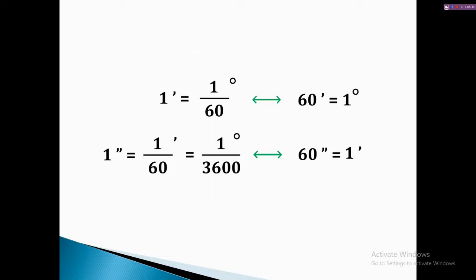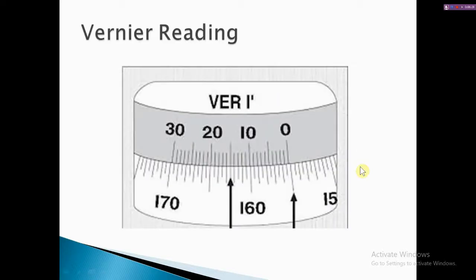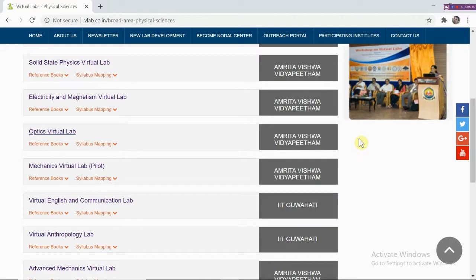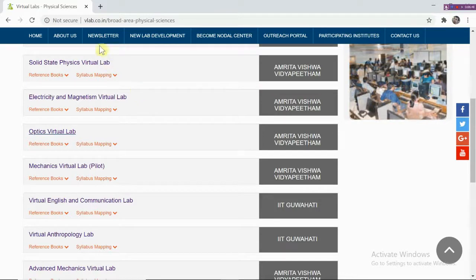Before we go with the experiment, we should know some important conversions. One of the most important is: one degree is 60 minutes, and one minute is equal to 60 seconds. Please remember this because we are going to use it for finding out the least count. If you look into the vernier scale, this is something you are also going to see in our setup. Before we continue with the presentation, let's look into the simulations from the website.